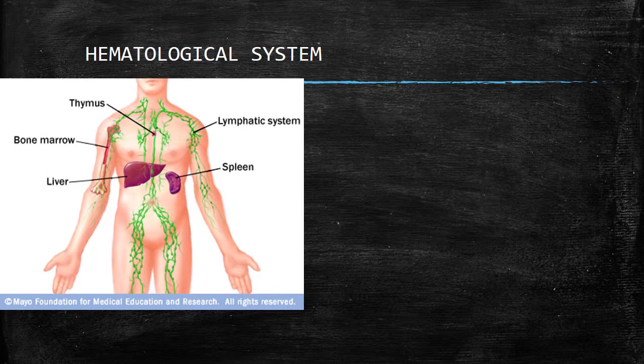This picture to the left depicts the organs of the hematological system. As you can see, we have the thymus, the bone marrow, the liver, the lymphatic system, and the spleen.